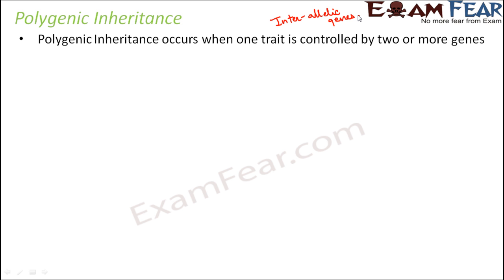Interallelic genes means alleles which are located on different genes. Like in monogenic inheritance, capital T and small t are alleles of the same gene. But in polygenic inheritance, we talk about alleles located on different genes, and that's how different genes control one trait.